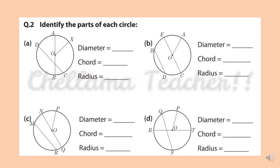Question: Identify the parts of each circle. For the given pictures, we have to name each part. From the first picture: diameter is AB, chord is DC, and radius is OX. For the second picture: diameter is EC, chord is BD, and radius is OA.